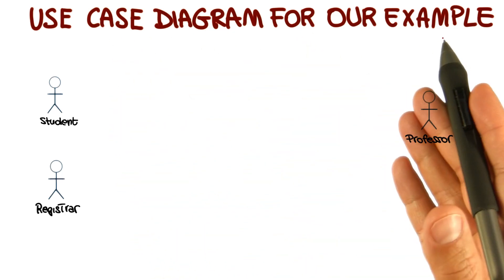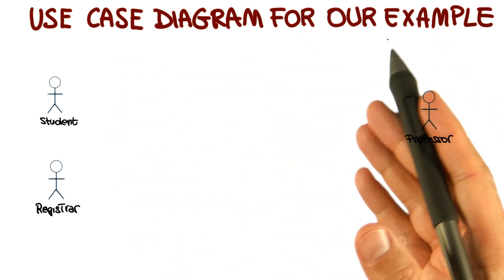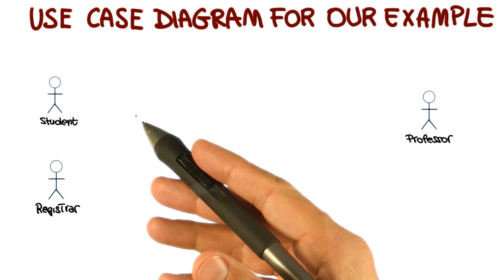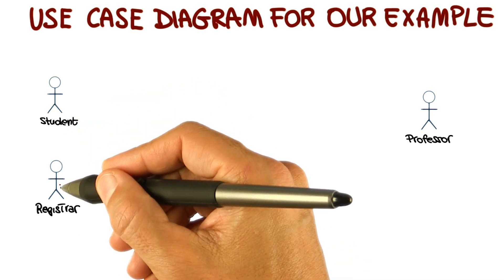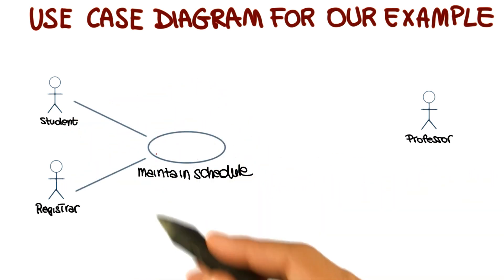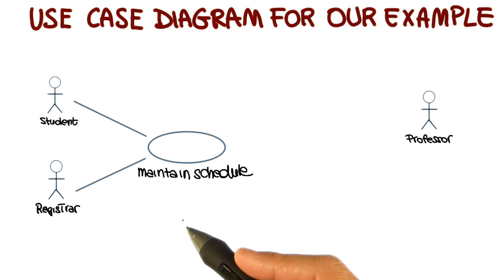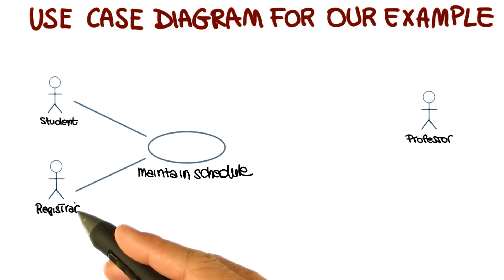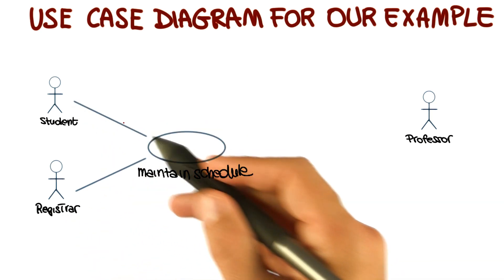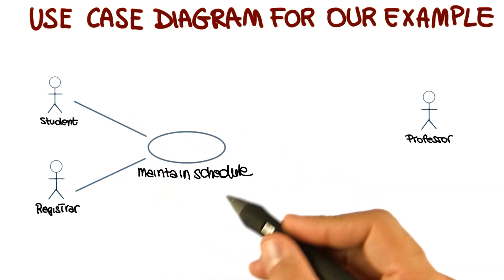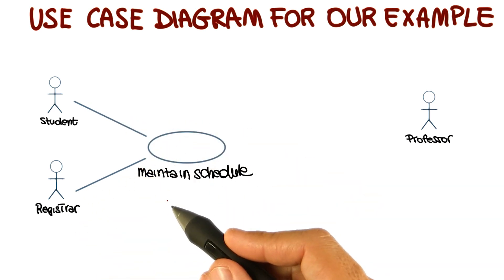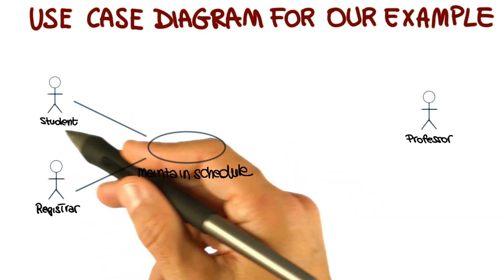Now, if we want to build a use case diagram for our example, we have to add the use cases for these different actors. For instance, if we consider the student and the registrar, they might both be interacting with the maintain schedule system — the registrar by updating the schedule, and the students by using the schedule that has been updated by the registrar. As you can see, these are different roles for the same use case.